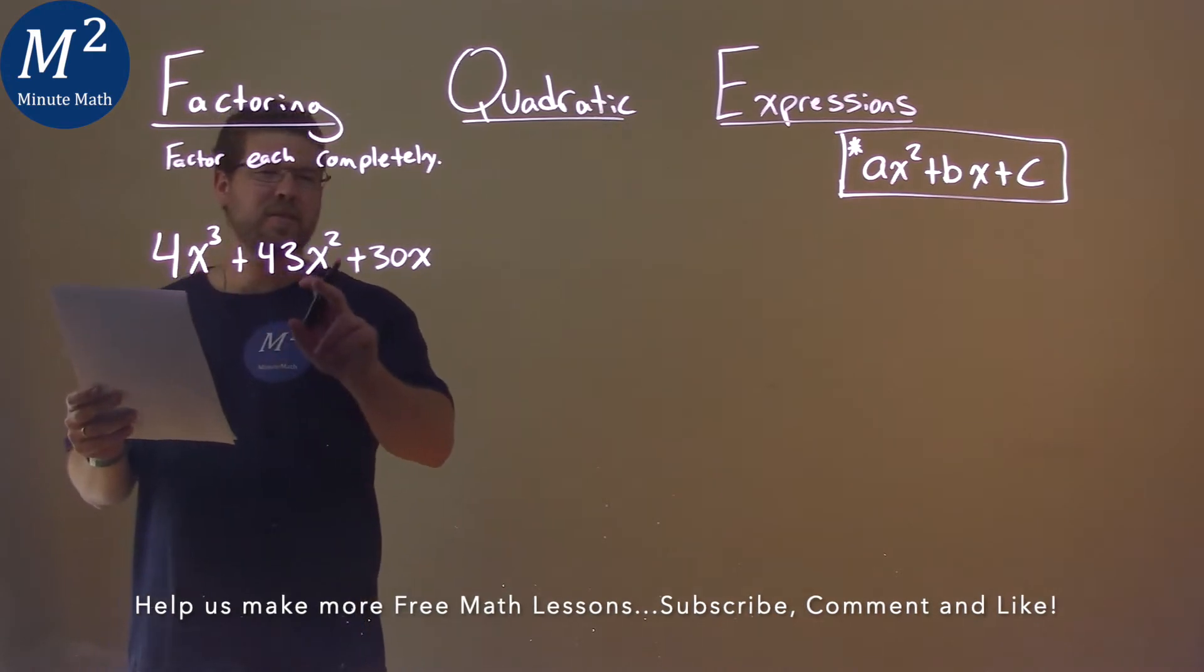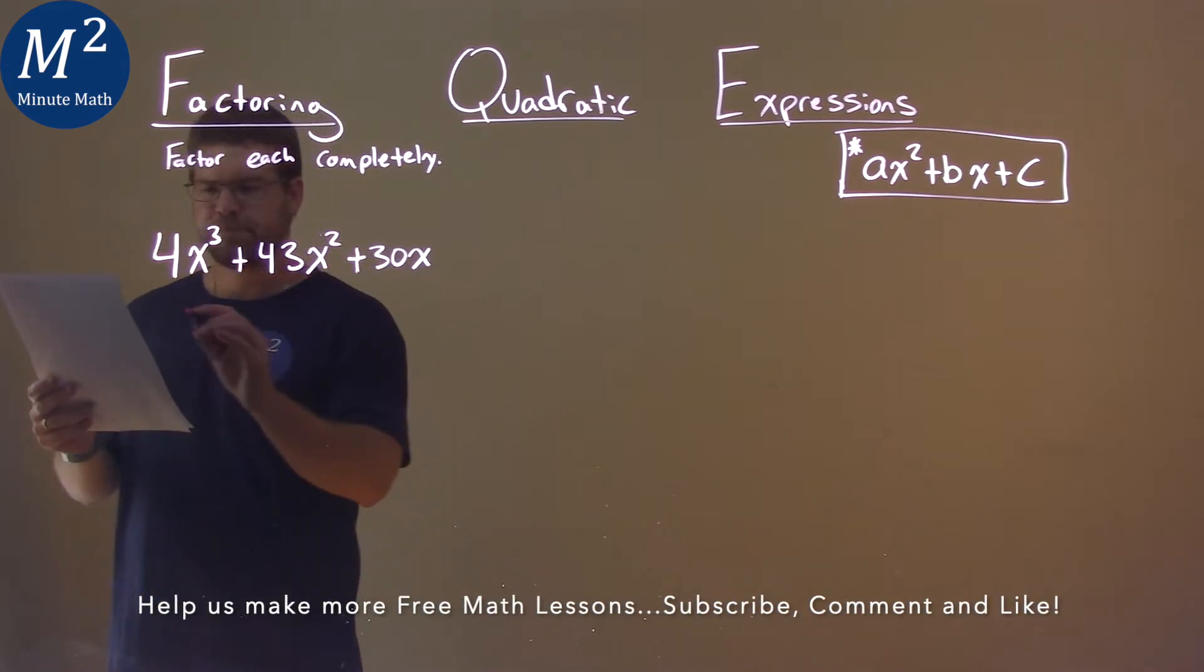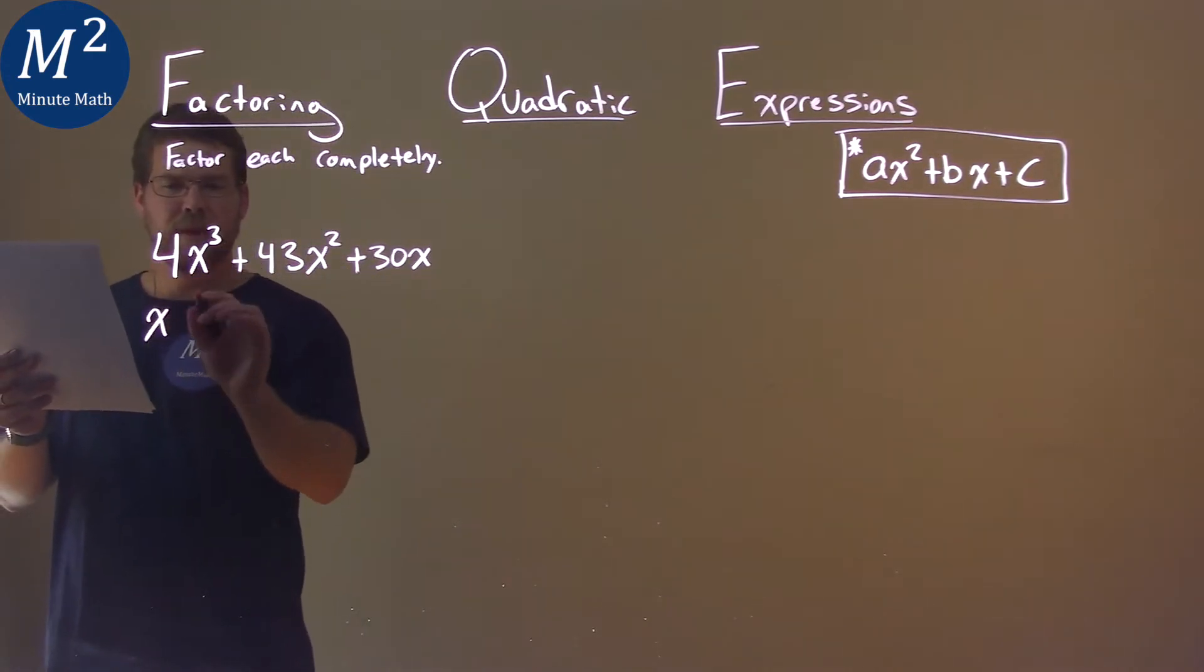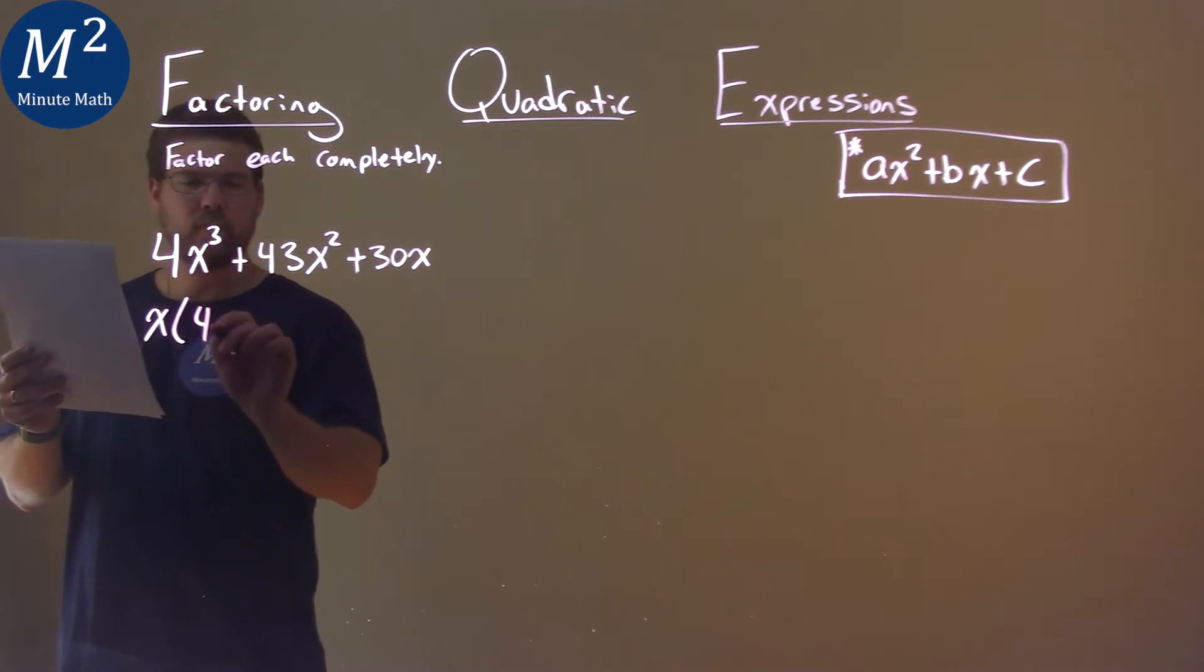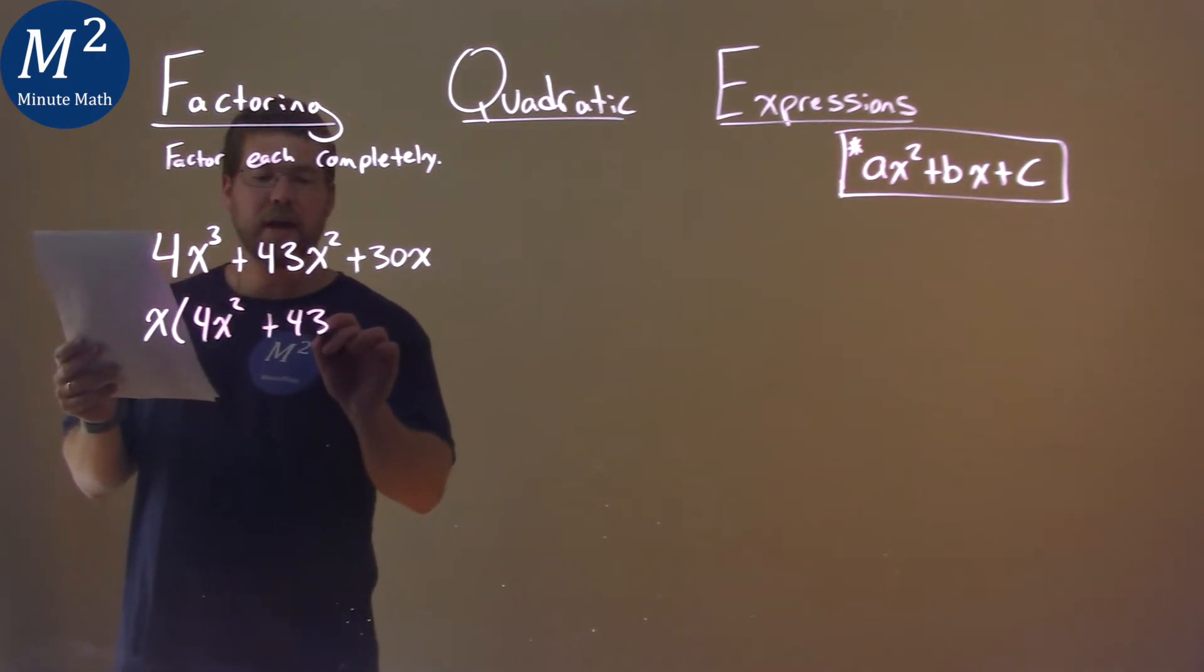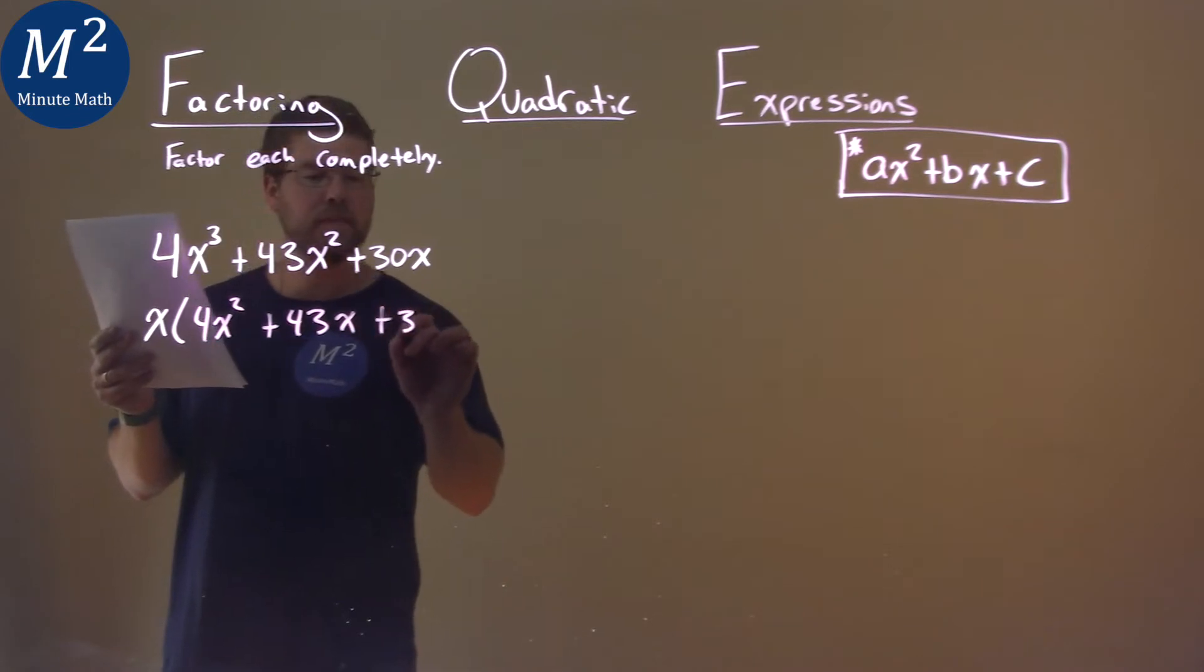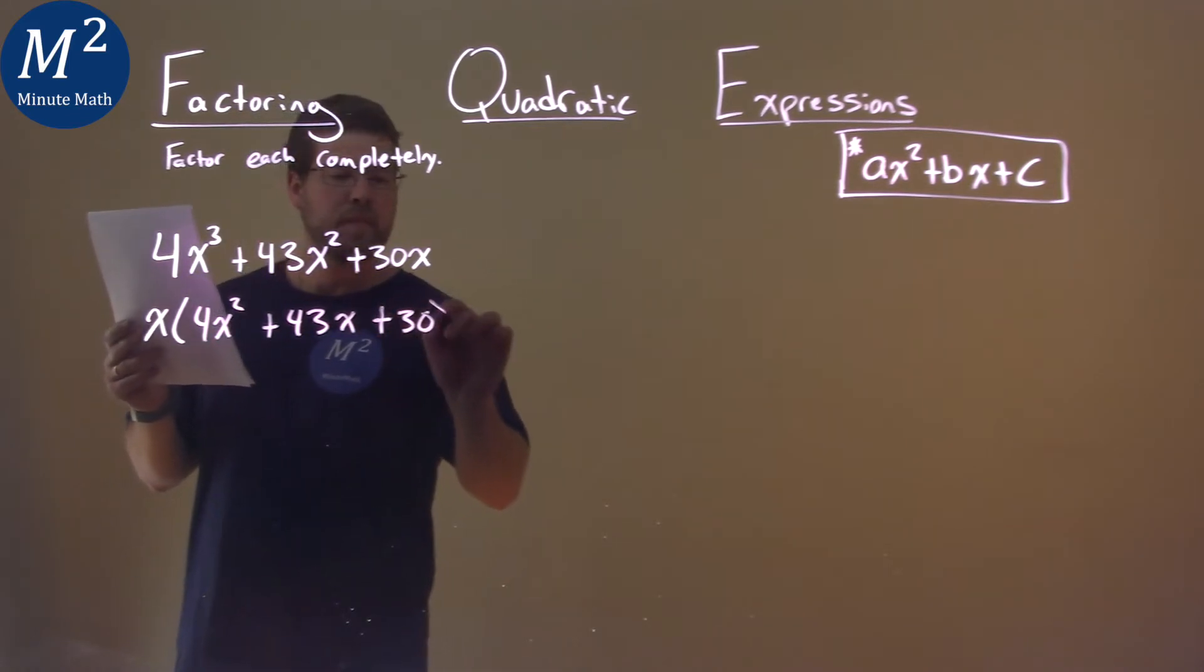First thing I notice is that there's an extra x in each part here, so we can pull that out. Pulling that out we have x times 4x squared plus 43x plus 30, and there we have it.